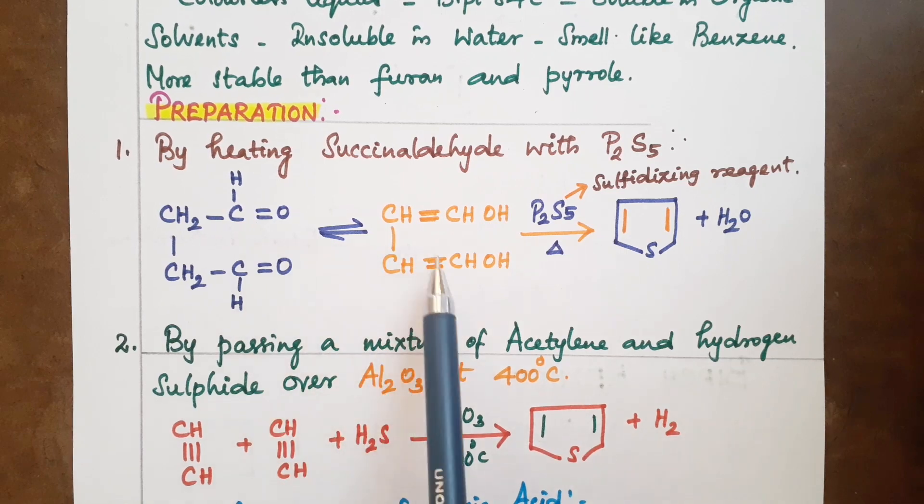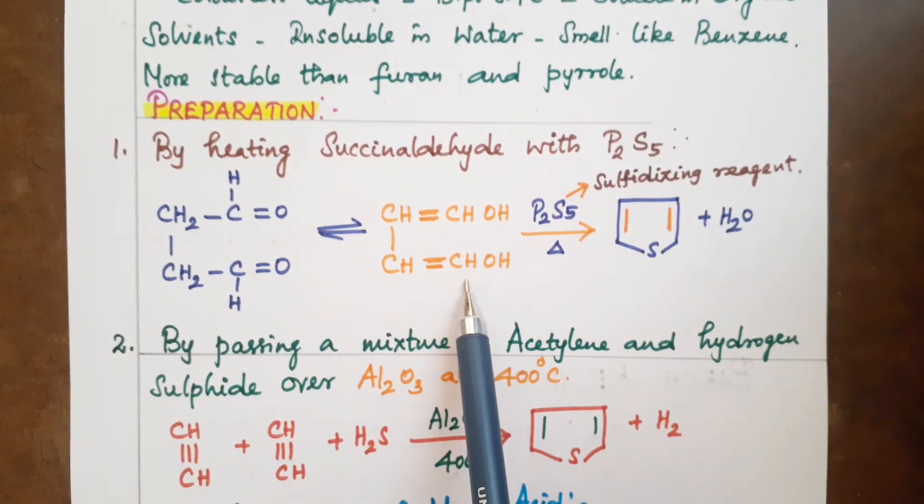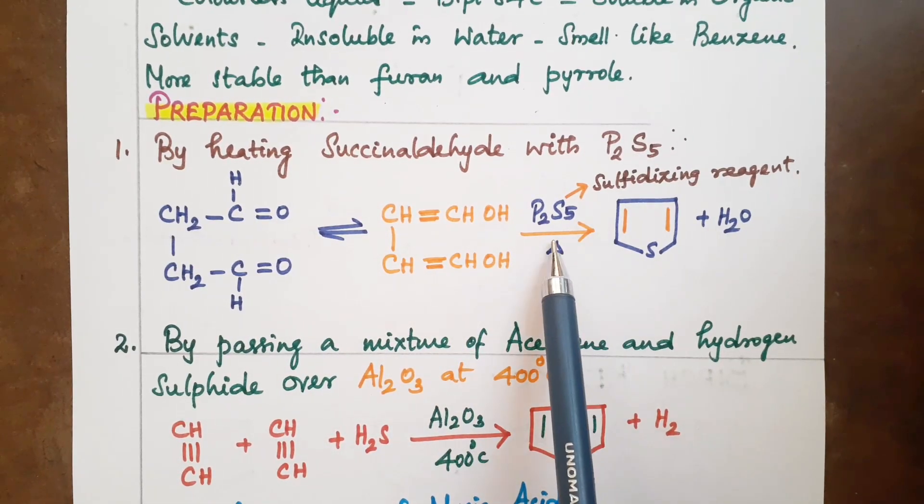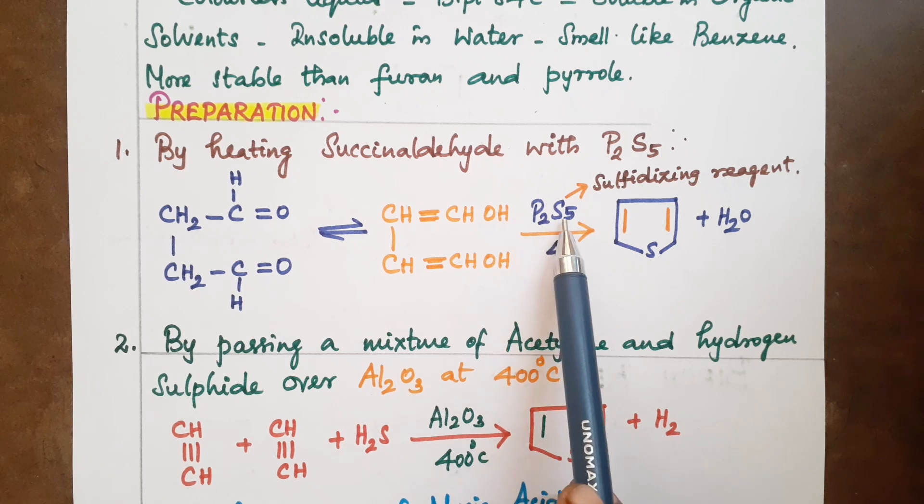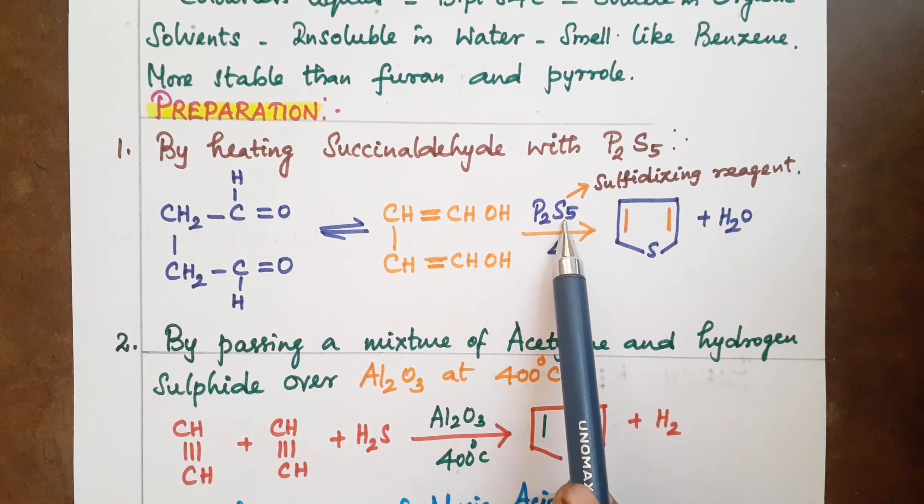Succinaldehyde, the first step is to convert with the sulfurizing reagent. This is P4S10 and P2S5. This is one of the polymer synthesis methods to produce thiophene.